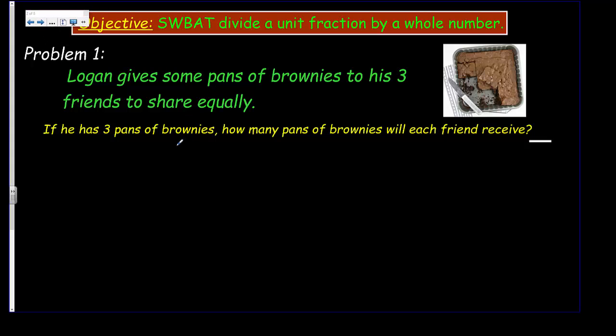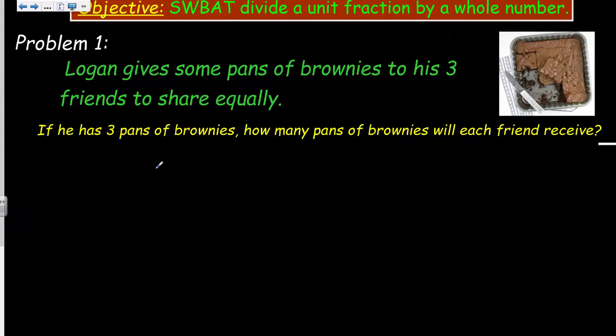Let's go ahead and take a look at this problem here. This is problem one. It says here, Logan, our good friend Logan, gives some pans of brownies to his three friends to share equally. What a pal. What a good guy, willing to share his brownies. If he has three pans of brownies, how many pans of brownies will each friend receive? I know you're thinking to yourself, Mr. Wara, this is just like the last time. This is really easy.